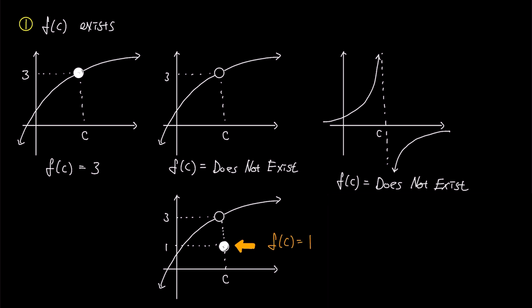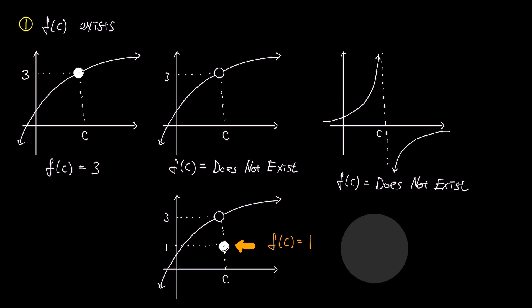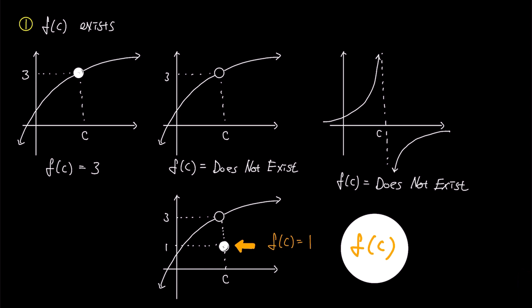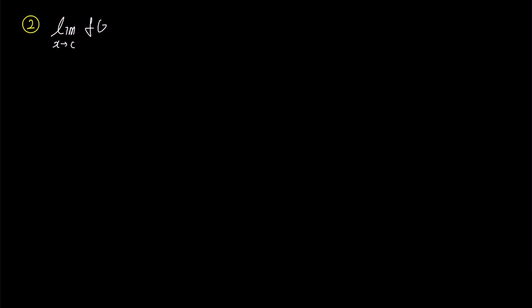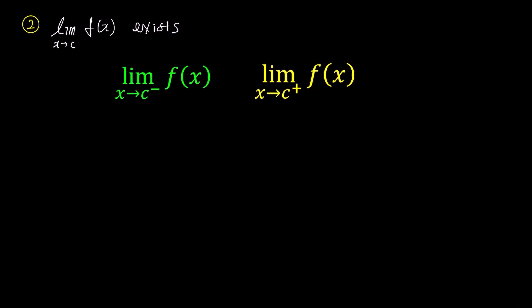Remember, if the point at x equals c is filled, f(c) always exists. For the second condition — existence of the limit of f — the limit exists when x approaches c from the left (the left-hand limit) and from the right (the right-hand limit), and these two limits are equal.